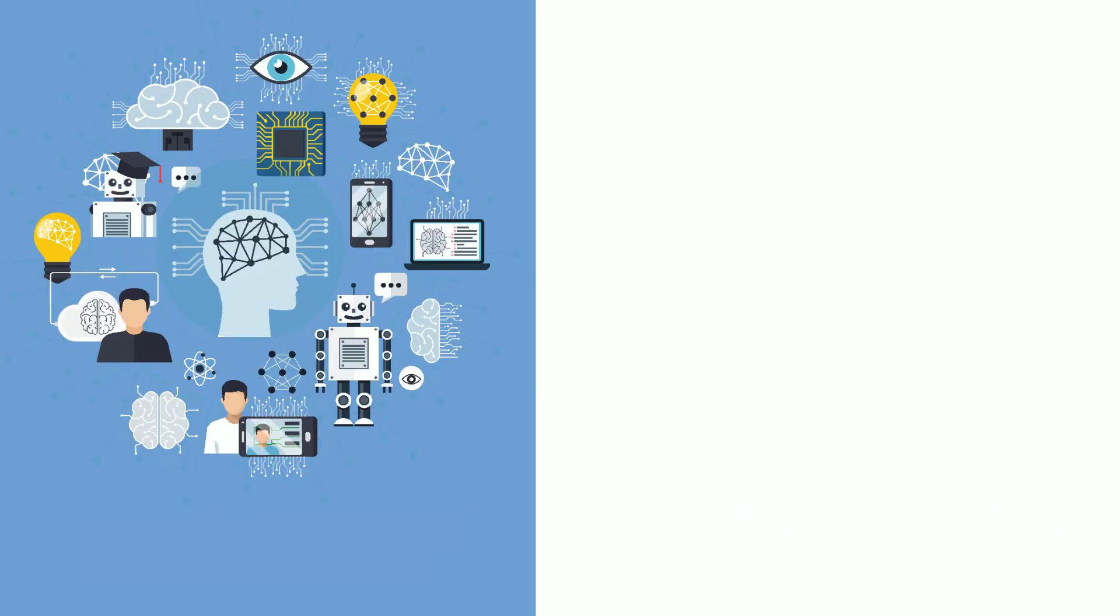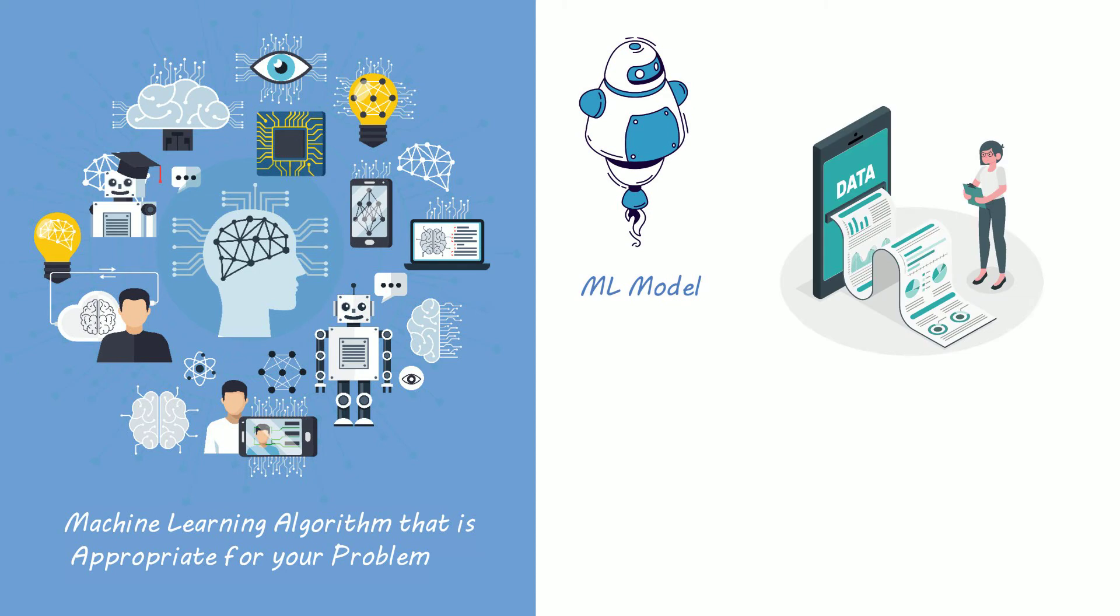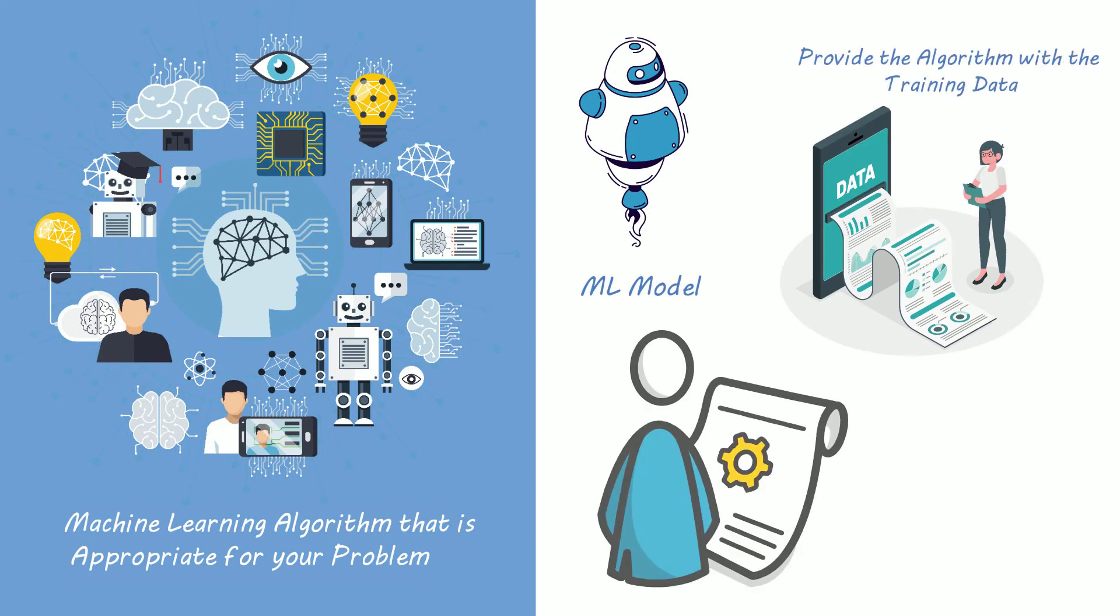In this phase you select a machine learning algorithm that is appropriate for your problem and then train your ML model. As part of that training you provide the algorithm with the training data to learn and form the set the model parameters to optimize the training process.